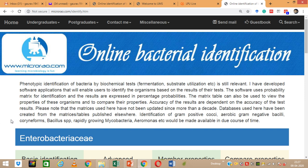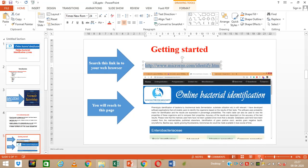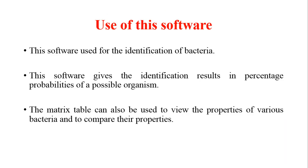The information on the homepage covers almost the same points already discussed. This online tool can be used for various purposes, with three major ones. First, it is used for the identification of bacteria, giving identification results as percentage probabilities of a possible organism — it will give you more than one result. While considering other parameters such as growth parameters, ecology, and isolation source, you can finally conclude your organism's identity.